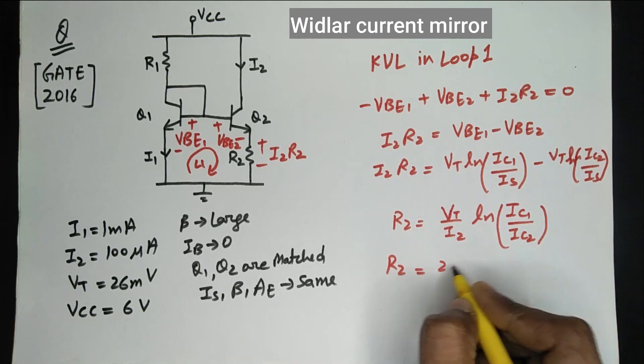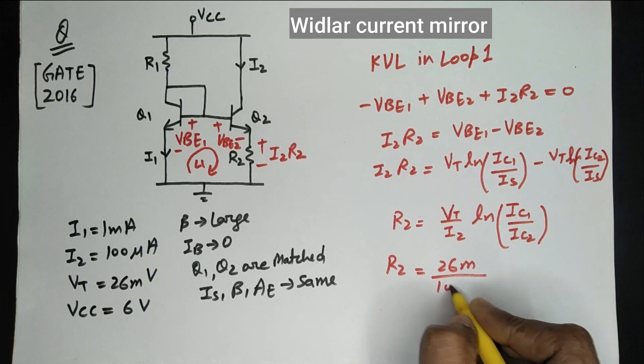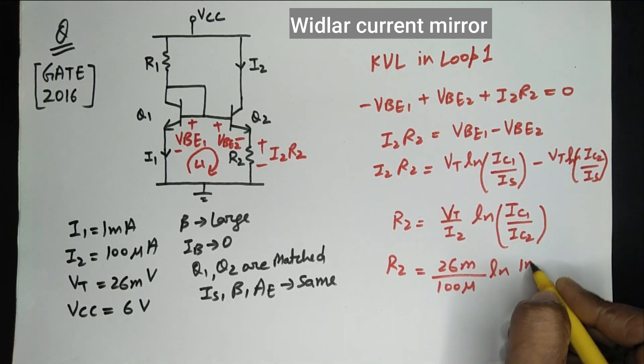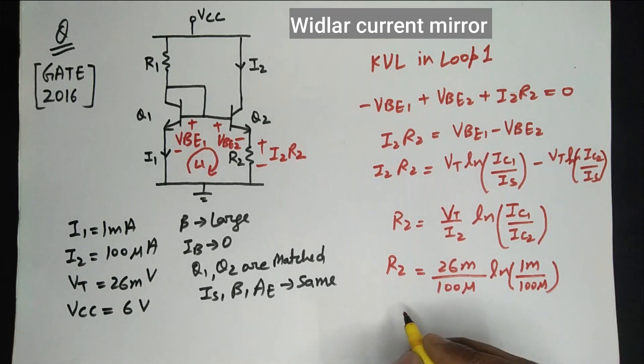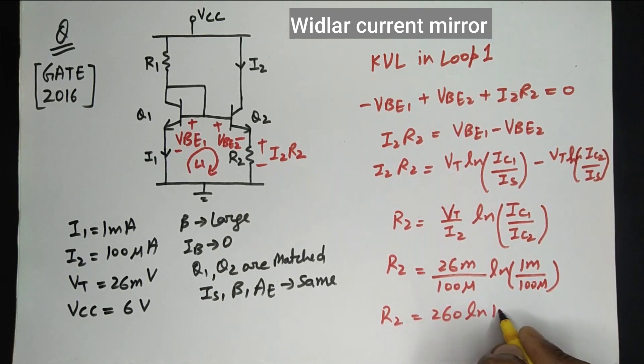R2 will be equal to 26 millivolts upon I2, which is 100 microamps, times ln of IC1, which is 1 milliamp upon 100 microamps. And on solving this equation we will get 260 outside and inside 10.